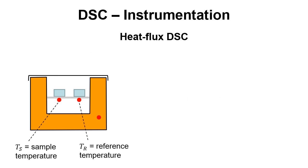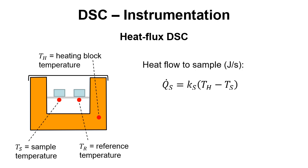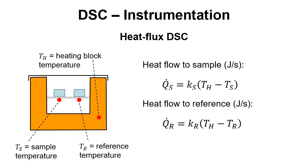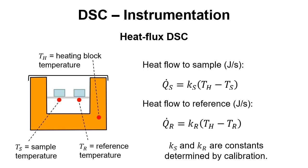We have T_S the sample temperature, T_R the reference temperature, and T_H the heating block temperature. The heat flow to the sample is given by the equation: Q-dot_S equals K_S times (T_H minus T_S), where K_S is a constant and the dot indicates a per-second basis. Similarly, the heat flow to the reference equals K_R times (T_H minus T_R). K_S and K_R are constants determined by calibration. This allows us to record and monitor the heat flow to the sample and reference, and it is the difference between these that we are interested in.